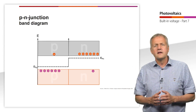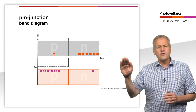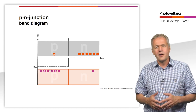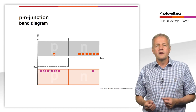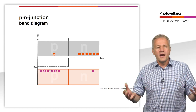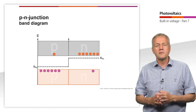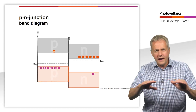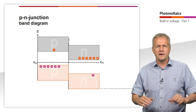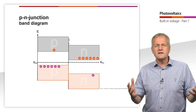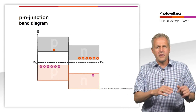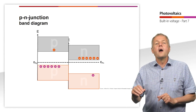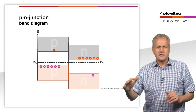Otherwise, there would be a current flow in the semiconductor and we would not be in thermal equilibrium, but we would have a perpetual motion machine. Therefore, the Fermi energies equalize. Since the distance between valence and conduction band stays the same, both bands bend.